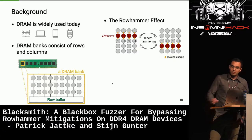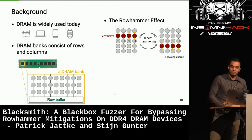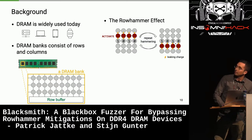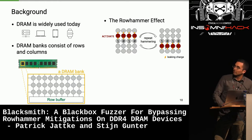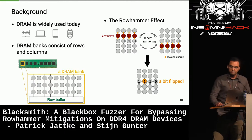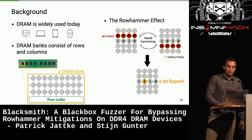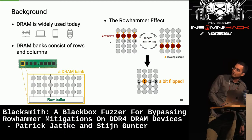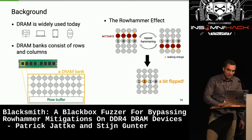The rowhammer effect was discovered in 2012. The idea is to exploit leaking capacitor charges by activating two aggressor rows with one victim row in between, repeatedly many times. These aggressor rows leak charges which impact the data stored in the victim row, and at some point you will see bit flips in the row in between. This is called double-sided rowhammer because you have two aggressor rows with one victim row in between. There are also other patterns that I will discuss later.